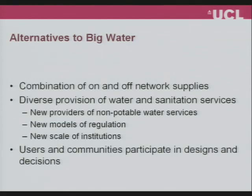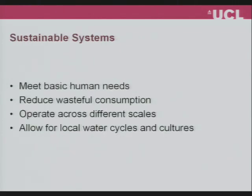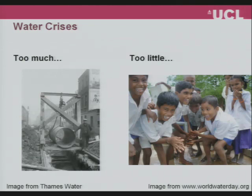Coming back from this understanding of everyday water compared with big engineering water, we need to actually involve users and communities in the design and decision-making about water infrastructure. Sustainable systems must meet basic human needs, reduce wasteful consumption, operate across different scales - from the intimate scale of your bathroom up to the catchment scale to reduce regional water stress - and allow for more local water cycles and water cultures. Perhaps we've got too much of the 19th century model of large-scale infrastructure and not enough that takes into account the very everyday, very local needs of users.